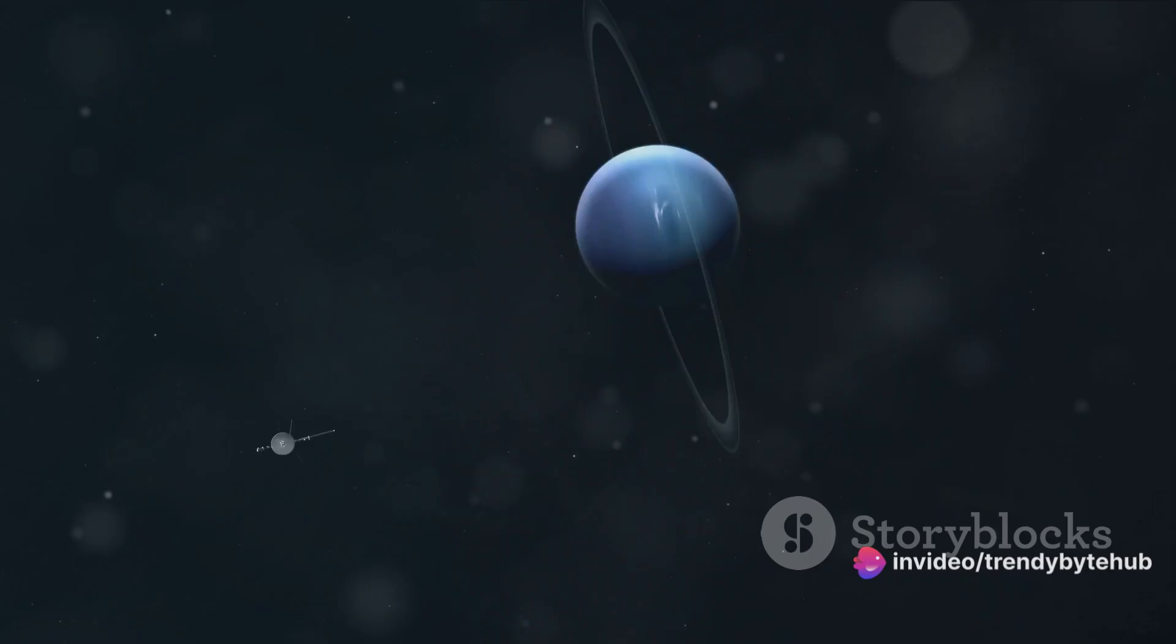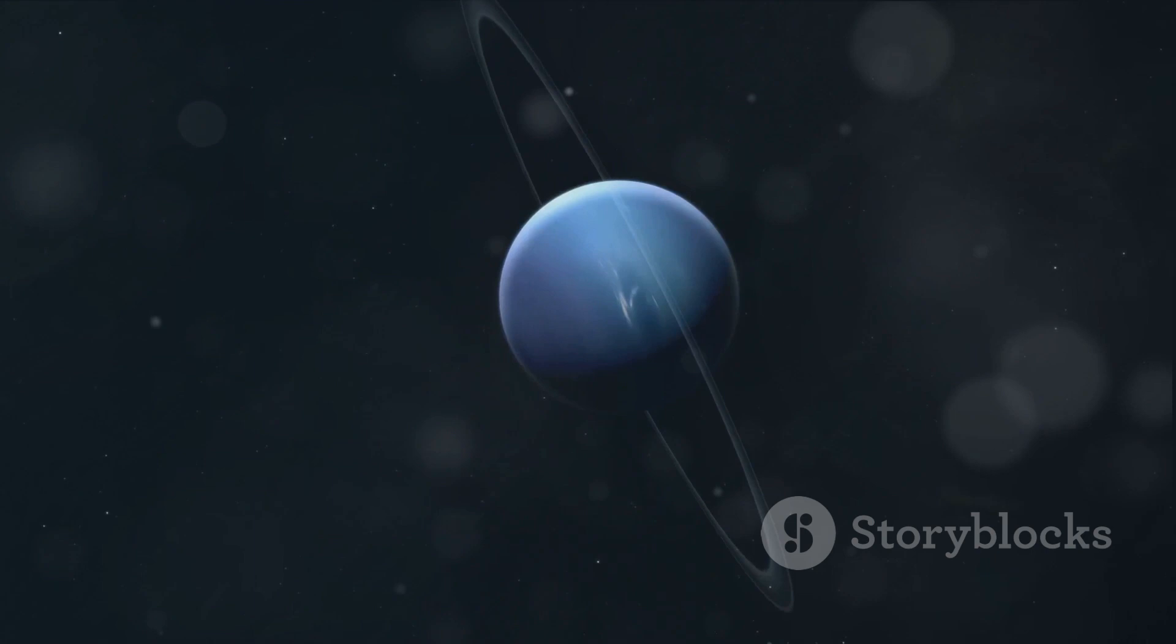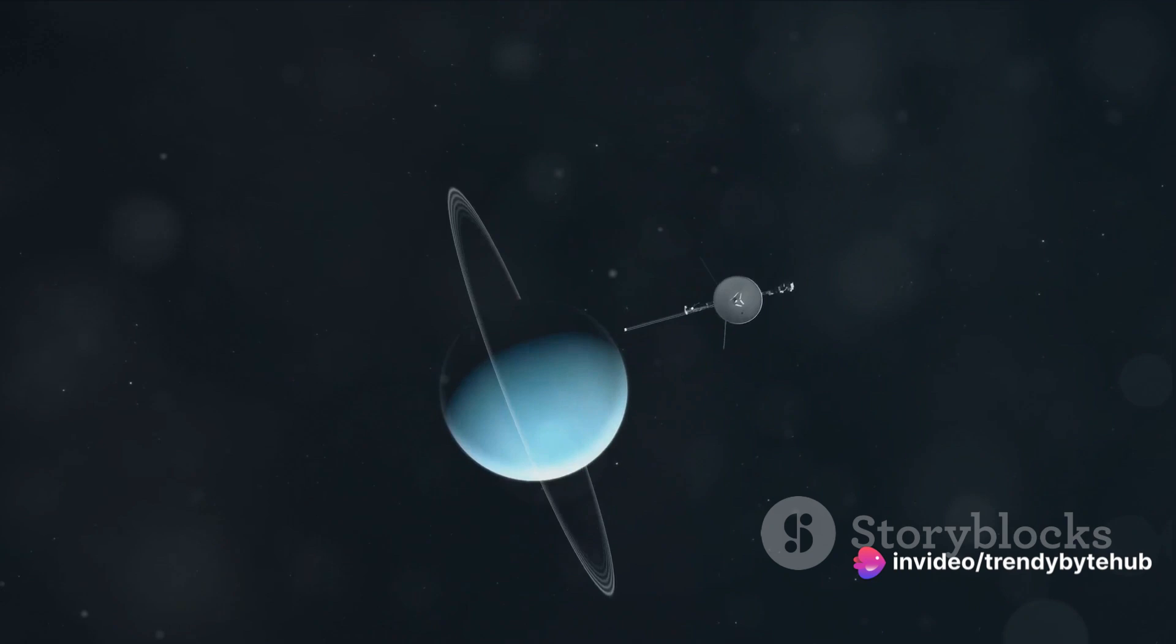But what led them to this prediction? Well, they were studying another distant planet, Uranus, and noticed that its orbit was not as it should be according to the laws of physics. It was as if an unseen force was tugging at Uranus, causing it to deviate from its expected path.